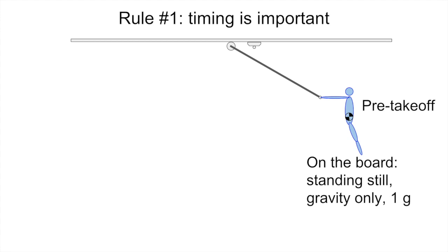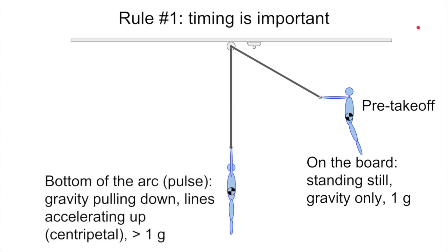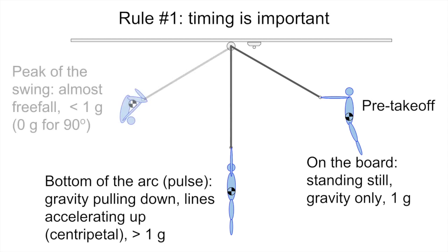So standing before takeoff, you're on the board, standing still. You feel the pull of gravity, 1g pulling you down, so you feel your normal weight. At the bottom of the swing, at pulse, gravity is pulling you down and the lines are accelerating you up to keep the fixed length, to keep you rotating along the arc, the centripetal force. And so you feel a subjective weight that's more than 1g. You feel like more than your normal weight. But then at the very peak of the swing, you're almost at freefall. You feel a subjective weight that's significantly less than 1g.